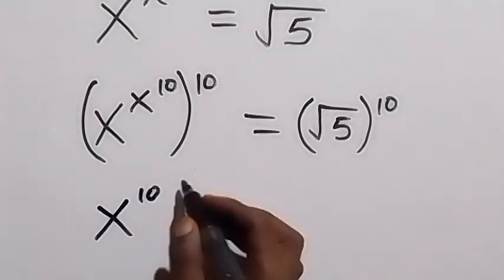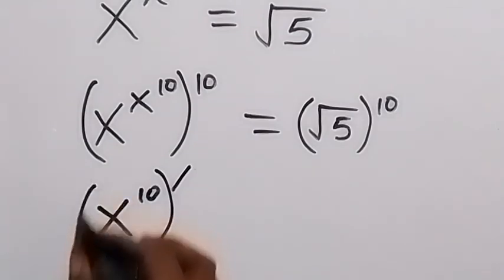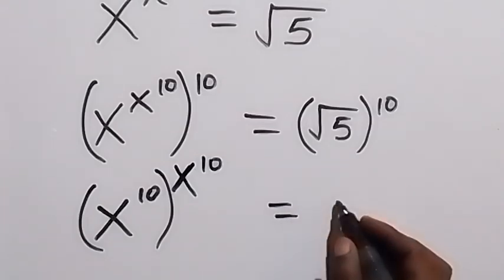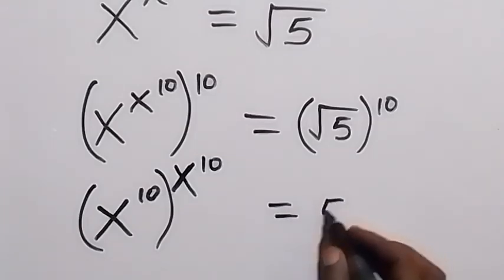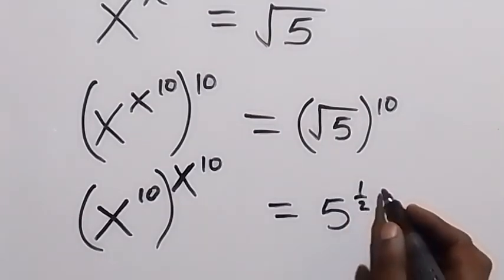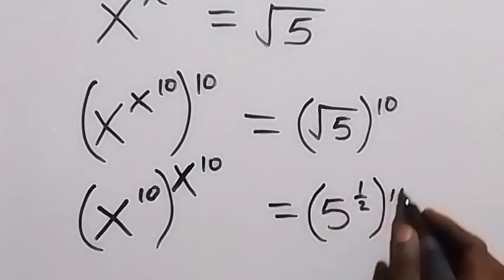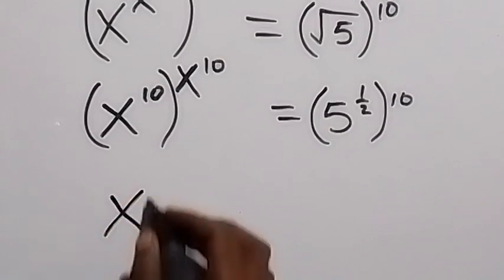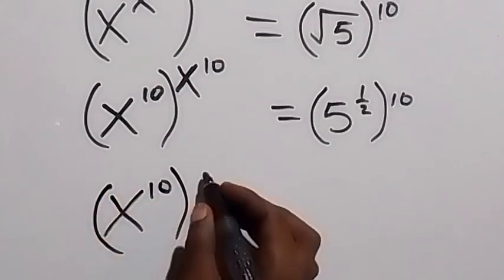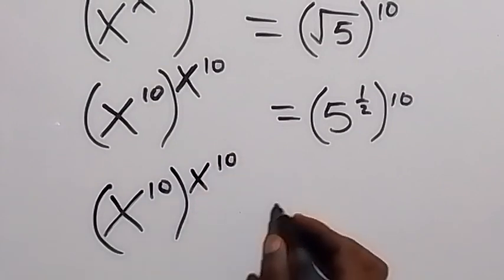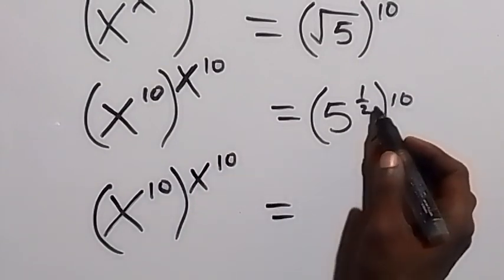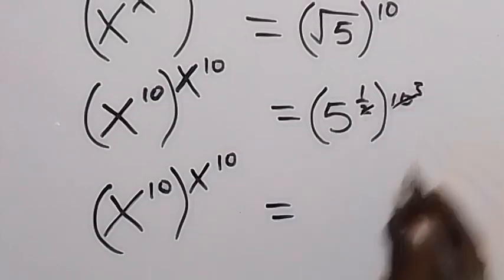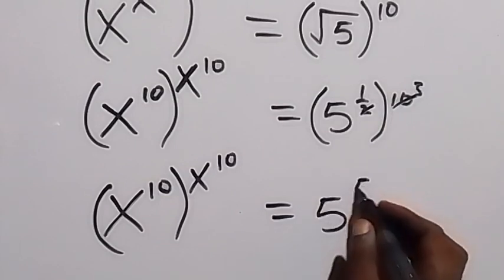Then raised to the power x — when we bring it outside that will be raised to power x, then raised to power 10. This equals here: we can write it as 5 raised to power one-half, then multiplied by raised to power 10. So we have x raised to power 10, then raised to power x raised to power 10. This power multiplies: 2 times 10 gives us 5 raised to power 5.